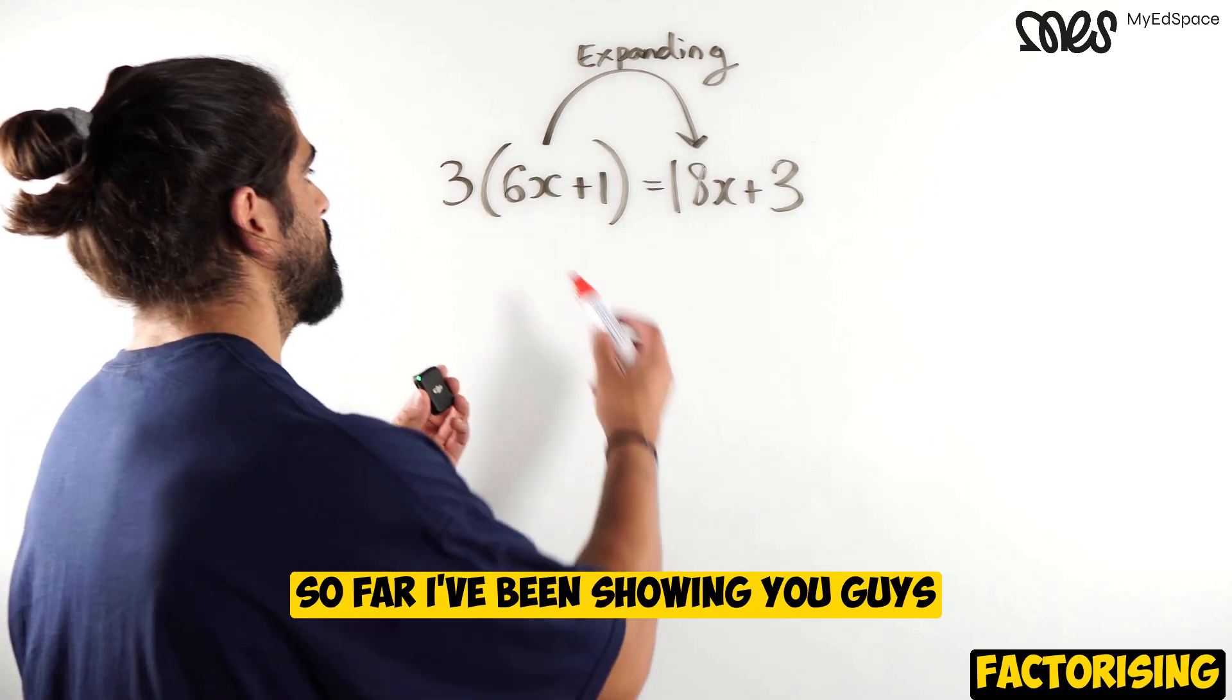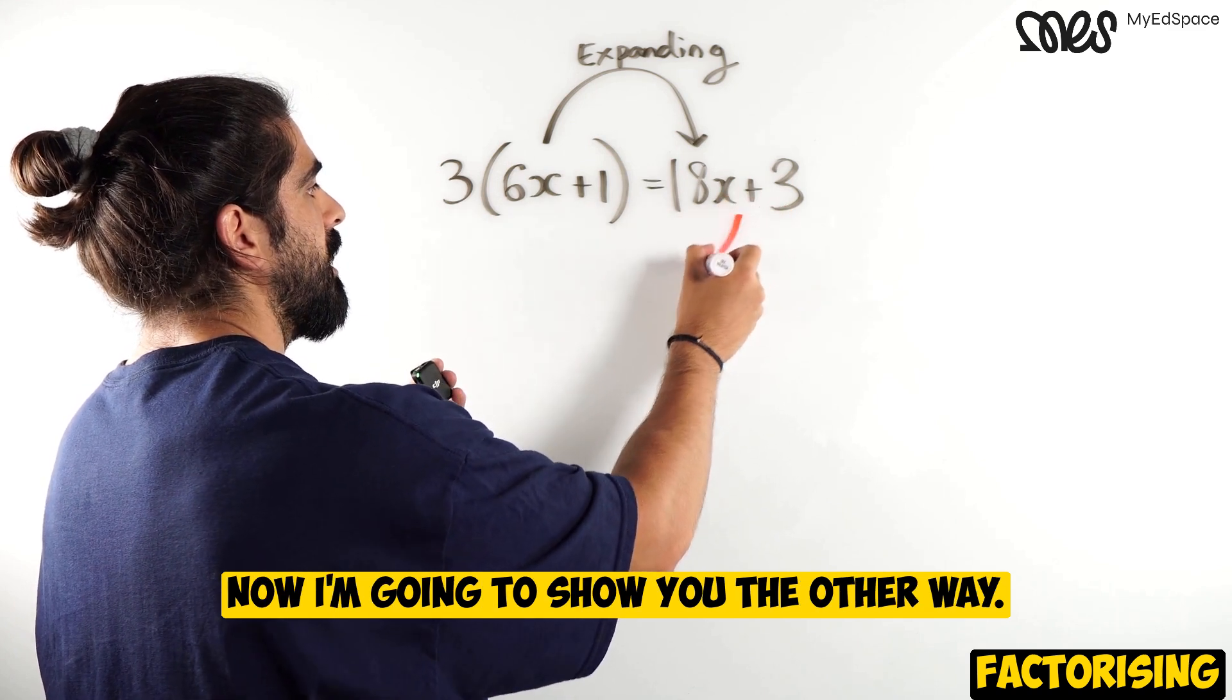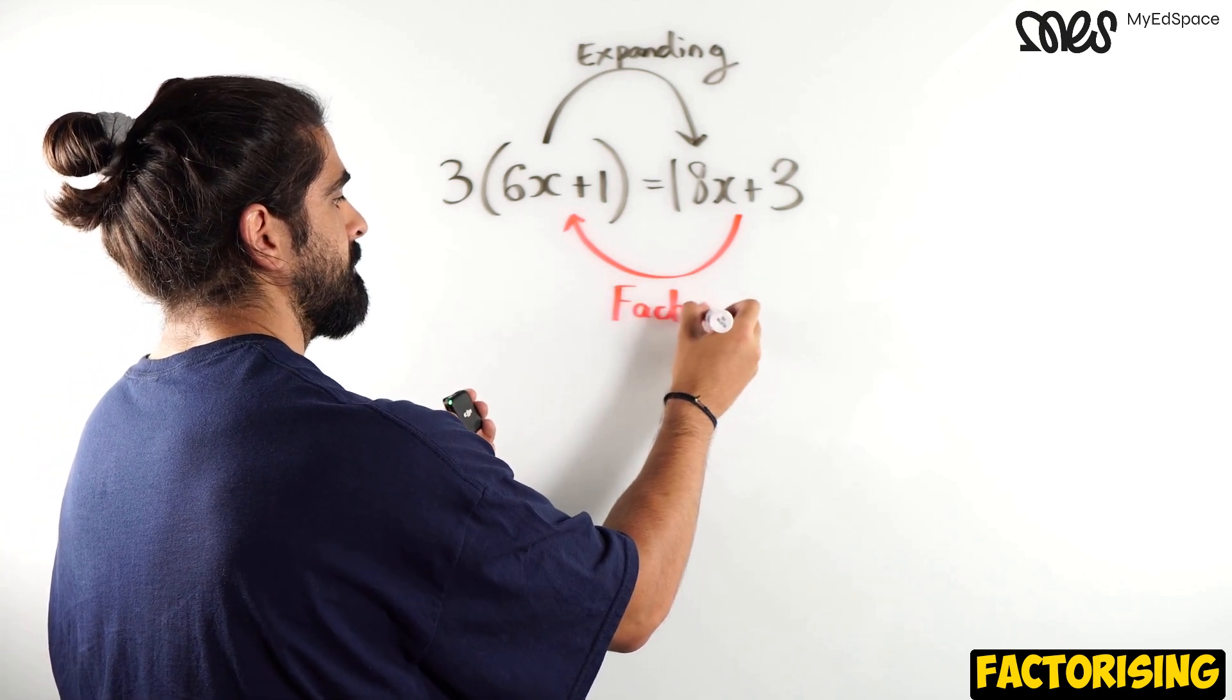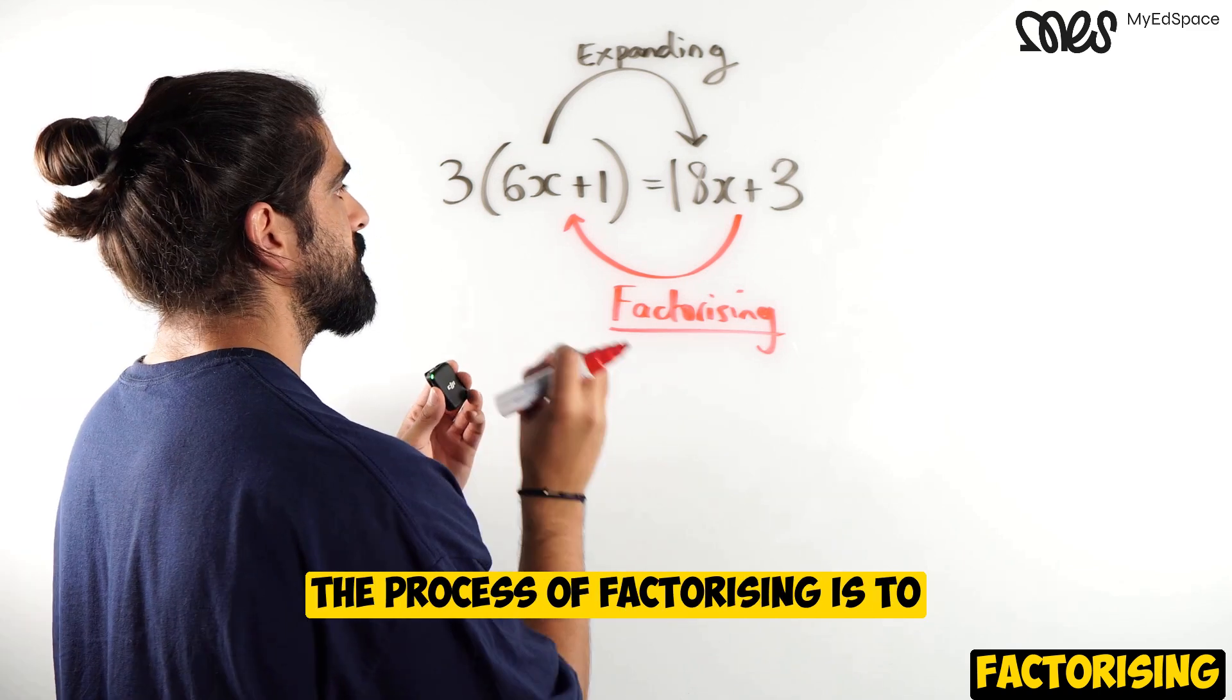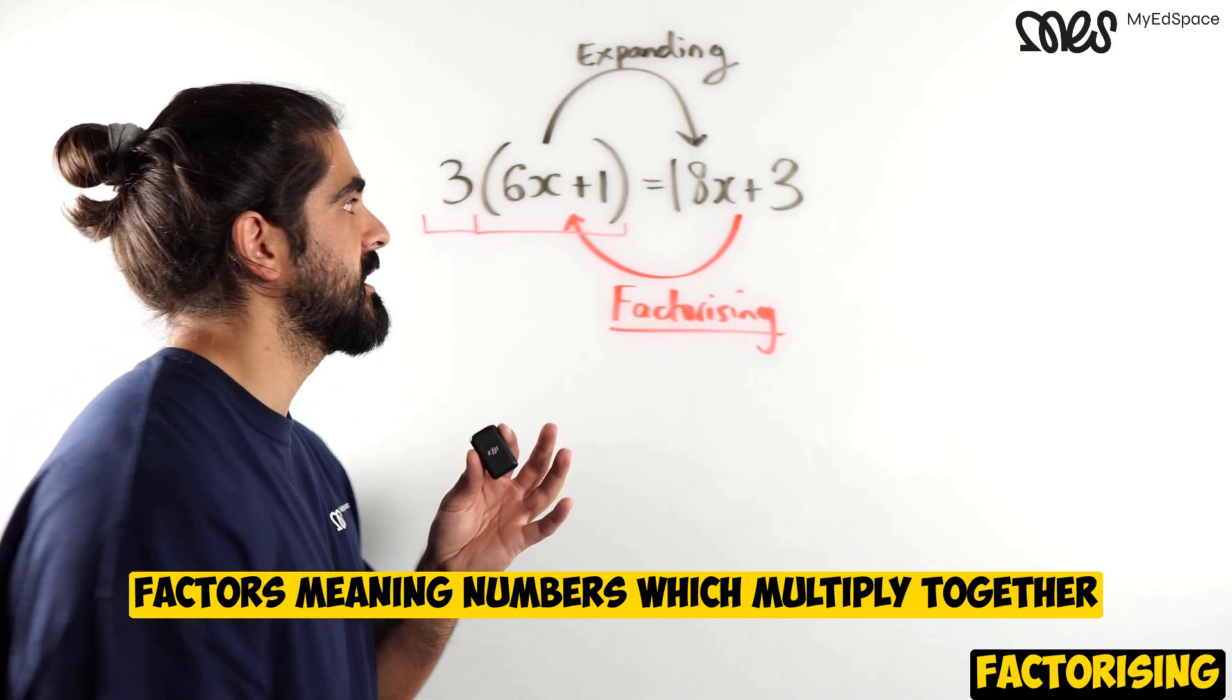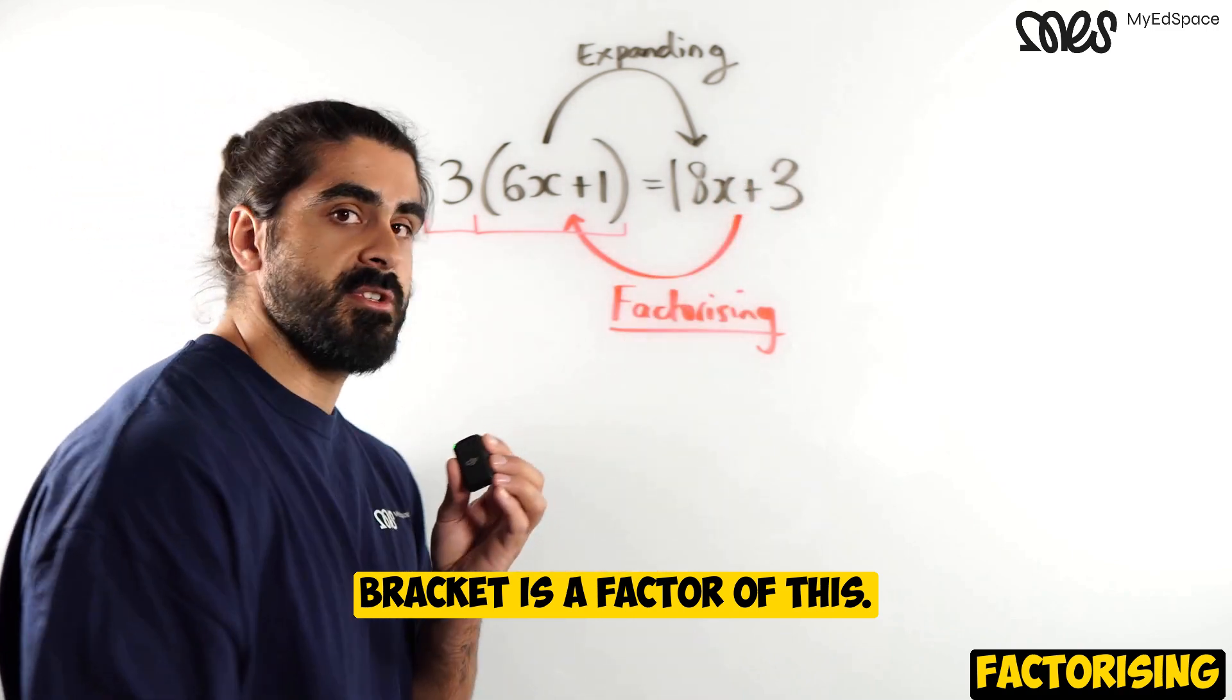So far, I've been showing you guys how to expand brackets. So when you have a bracket, you multiply in the term in the front to give you this expression. Now I'm going to show you the other way. If I give you an expanded form, how do we go back to a bracketed form? This is known as factorizing and is probably the most crucial topic in algebra. The process of factorizing is to write an expression as a product of factors. Factors meaning numbers which multiply together to give you a desired result. So for example, 3 is a factor of this and this bracket is a factor of this. Let me show you how to do it.